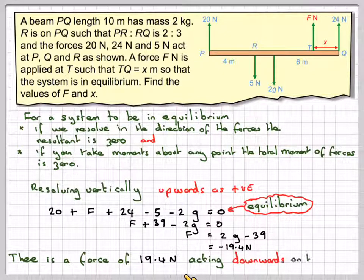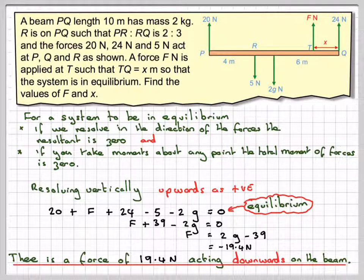There was a force of 19.4N acting downwards on the beam because it came out to be negative.